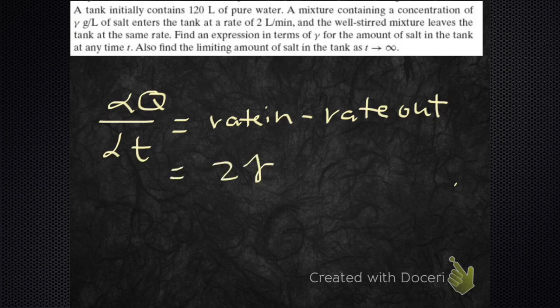So the rate in is 2 times gamma. Why? Because it's coming in at 2 liters per minute and it's at concentration of gamma. Gamma is just some constant, the concentration of the salt coming in.